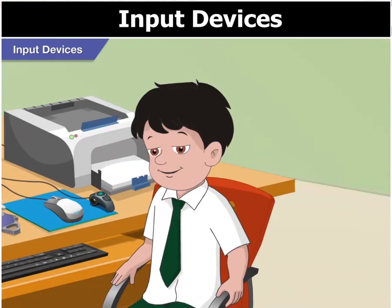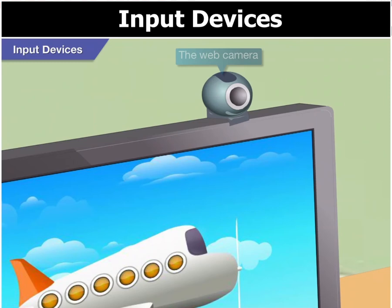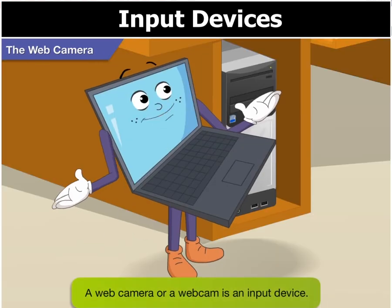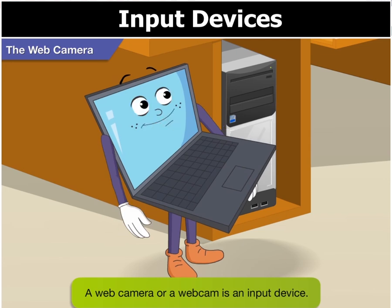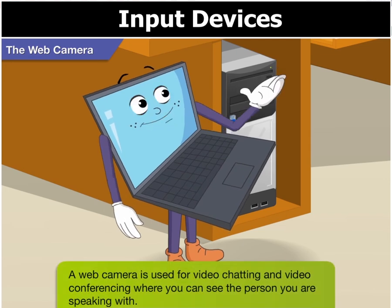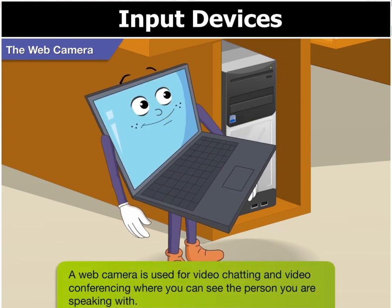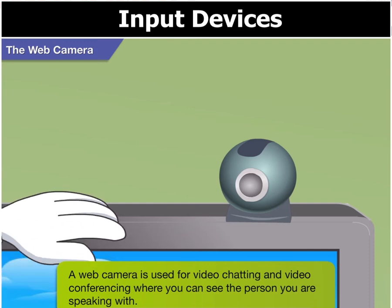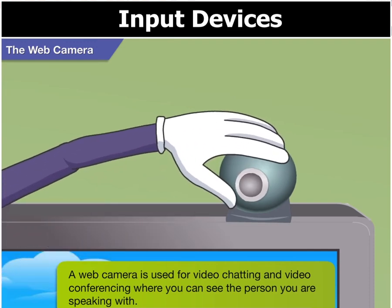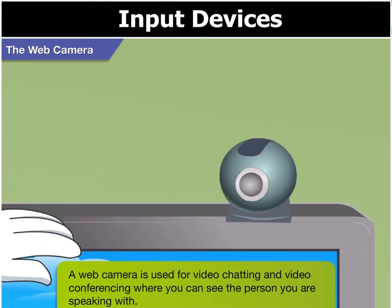Toggle, look here. I think this is a web camera. Right Goggle, a webcam is also an input device. It is used for video chatting and video conferencing where you can see the person you are speaking with.